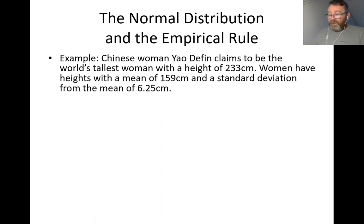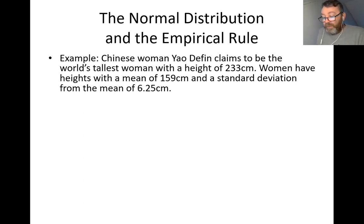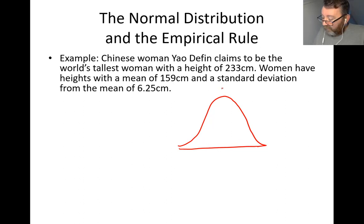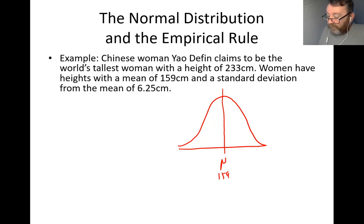Example: Chinese woman Yao Defen claims to be the world's tallest woman with a height of 233 centimetres. Women's heights have a mean of 159 centimetres and a standard deviation of 6.25 centimetres. Height is a naturally distributed statistic, so we expect a normal distribution. In the middle of the distribution sits the mean of 159. Let's go one, two, and three standard deviations either side.